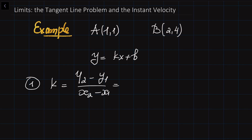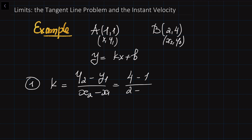So where Y1, Y2, X1, X2 are the coordinates of the two points. We just need to plug them into the formula to calculate the slope. So this is going to be 4 minus 1 divided by 2 minus 1, which is equal to 3. Now we have the equation of the line: Y is equal to 3X plus B, and we just need to find B.